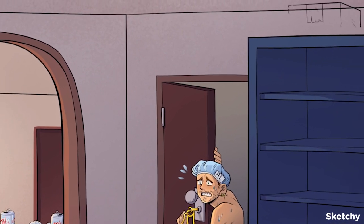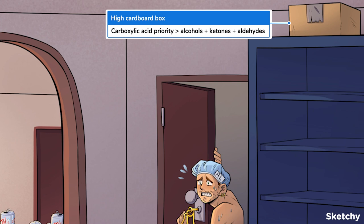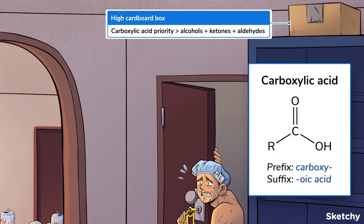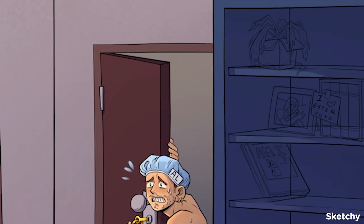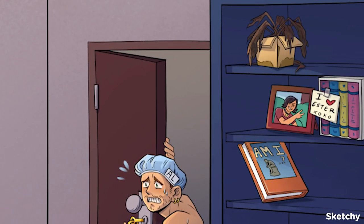That brings us to the highest priority functional groups we're going to cover: carboxylic acids and their derivatives. We've represented carboxylic acids with this cardboard box up above everything else in the room. Carboxylic acids consist of a carbon double-bonded to an oxygen, and single-bonded to another oxygen as part of an OH group. When naming these molecules, we can use the prefix carboxy, or the suffix oic acid. There are also a few shelves to fill in between — the carboxylic acid derivatives, which are functional groups you get by removing the OH group of a carboxylic acid and replacing it with something else. These derivatives are higher priority than aldehydes, though still below unmodified carboxylic acids.